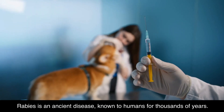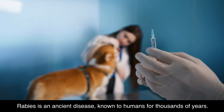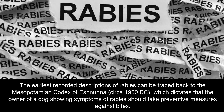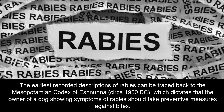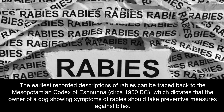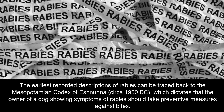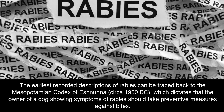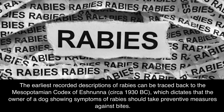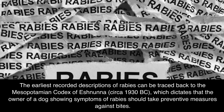Rabies is an ancient disease, known to humans for thousands of years. The earliest recorded descriptions of rabies can be traced back to the Mesopotamian Codex of Eshnuna, circa 1930 BC, which dictates that the owner of a dog showing symptoms of rabies should take preventive measures against bites.